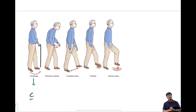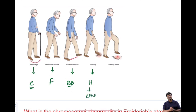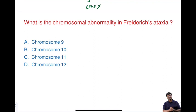Summary of gaits: circumducted gait (hemiplegic gait) in stroke/UMN lesion; festinating gait in Parkinson's disease; broad-based gait veering toward the side of lesion in cerebellar disease; high steppage gait in foot drop from common peroneal nerve injury; high steppage gait in sensory ataxia from peripheral neuropathy (as seen in alcoholics). Please answer the question in the comments: what is the chromosomal abnormality in Friedreich's ataxia? Thank you, see you tomorrow.